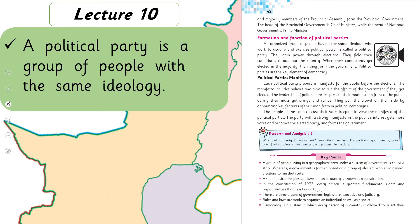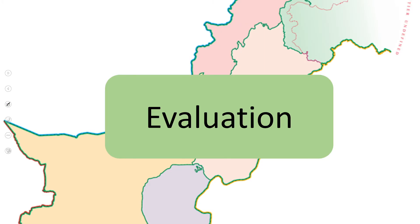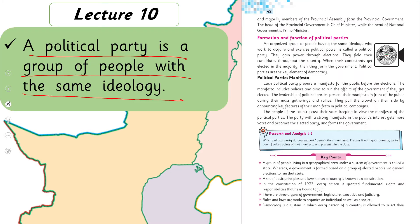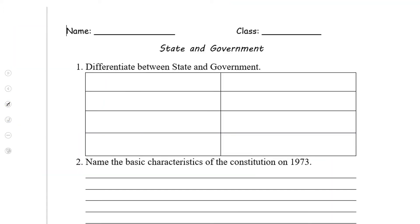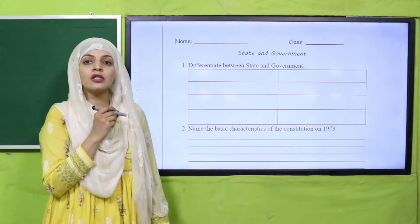In lecture number ten, we discussed the political party. A political party is a group of people with the same ideology. We also discussed the manifesto, which contains the aims and policies made by the political party before the general elections.